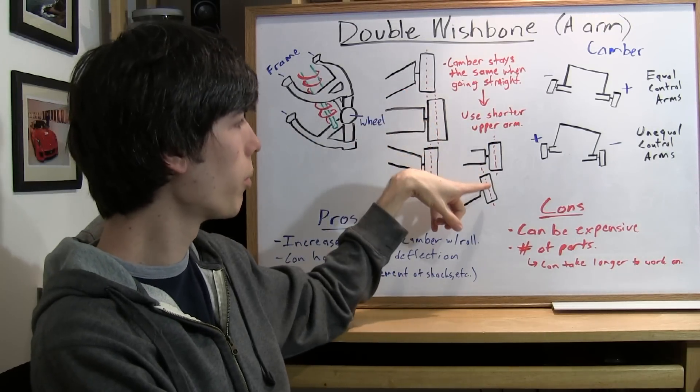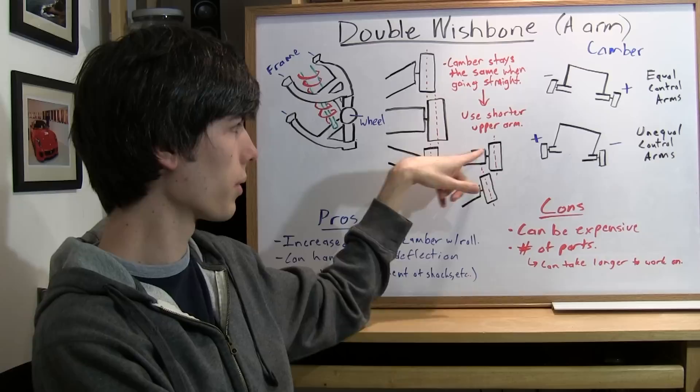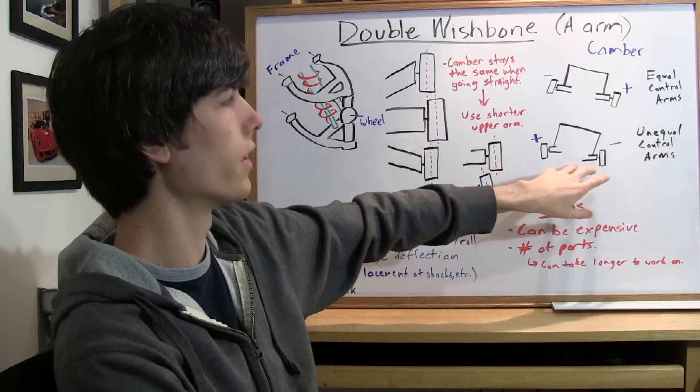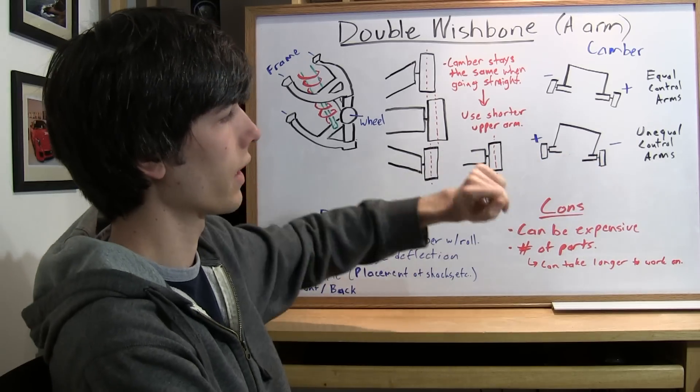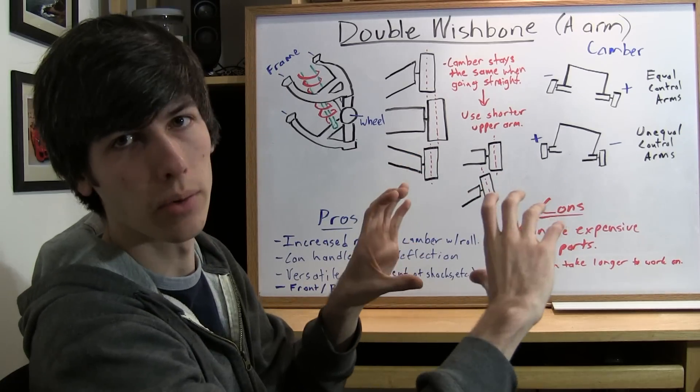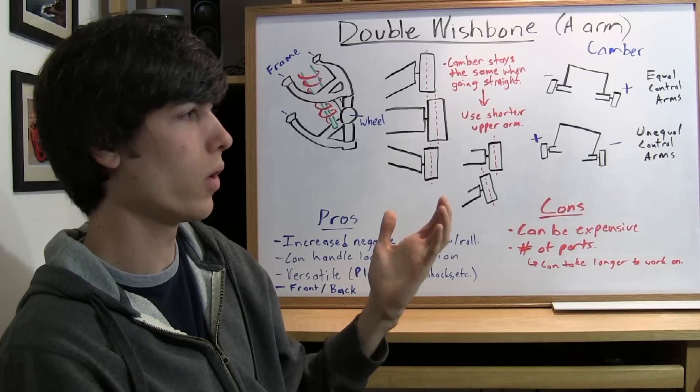So once you put on these shorter upper control arms, you can see that it'll have a slight negative camber when going around that left hand corner. And so the tire will make itself flat with the road surface even as your body rolls. And that's what you want.